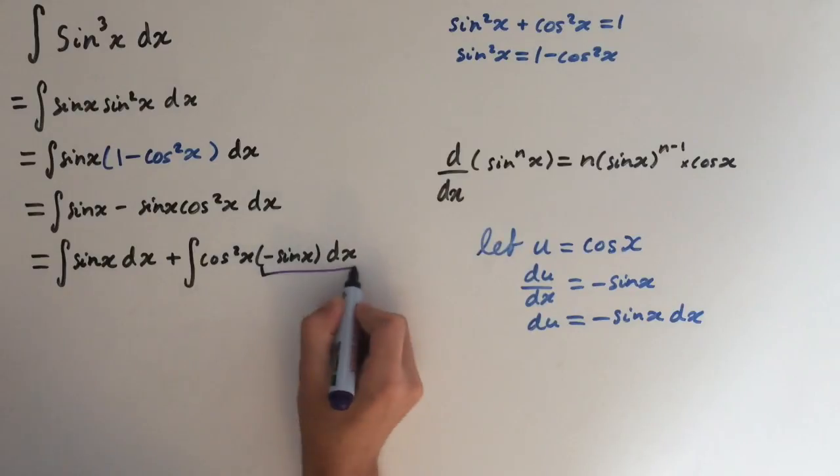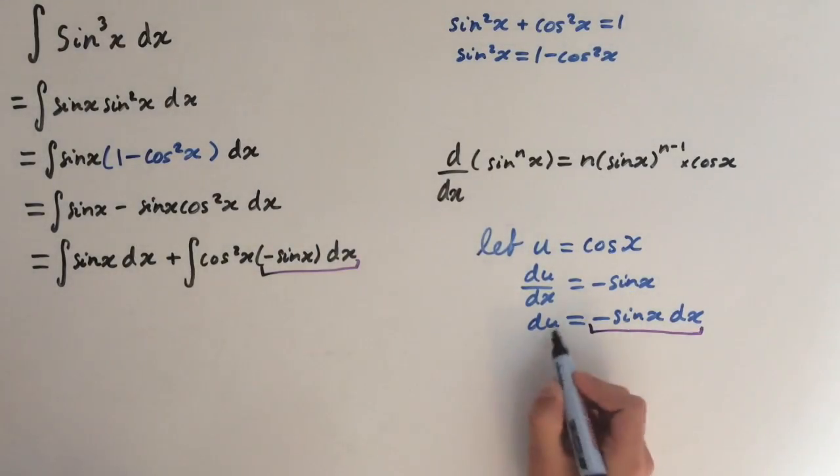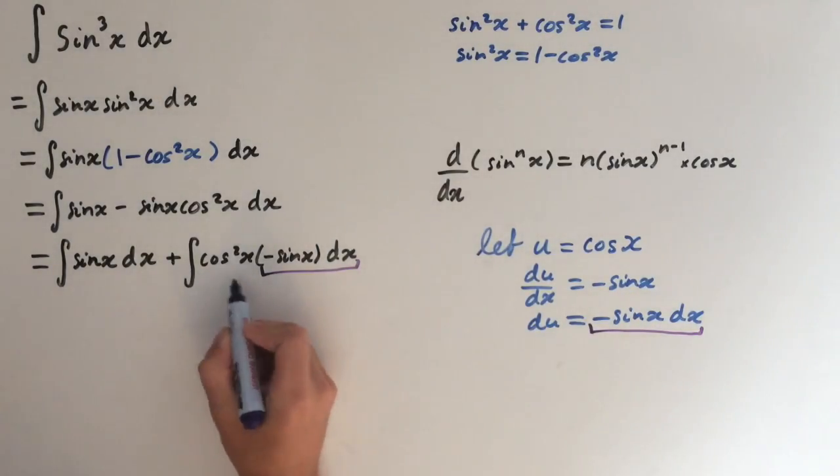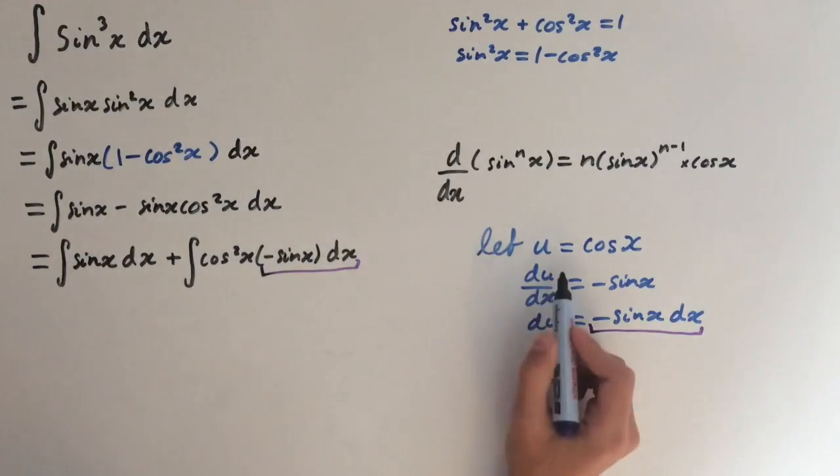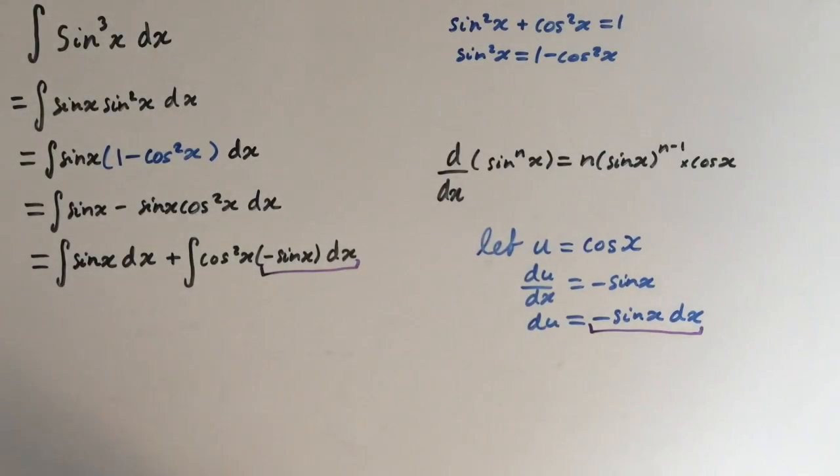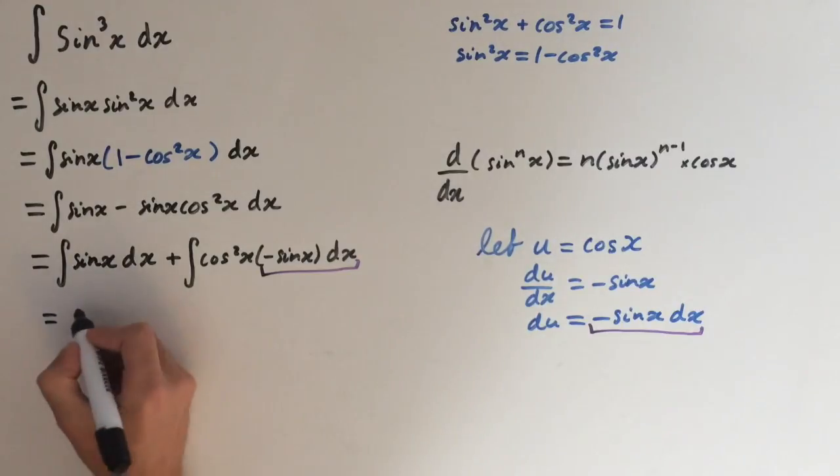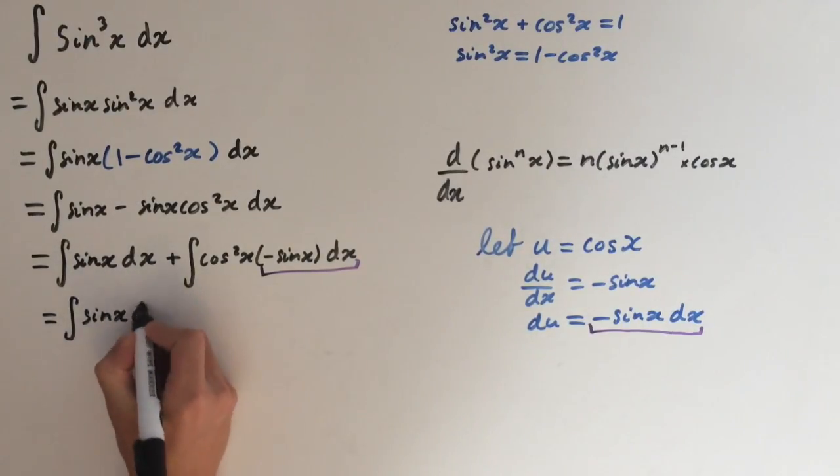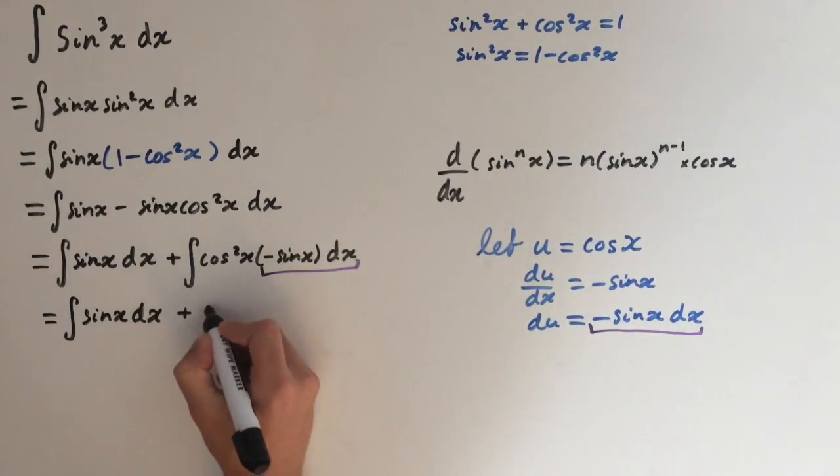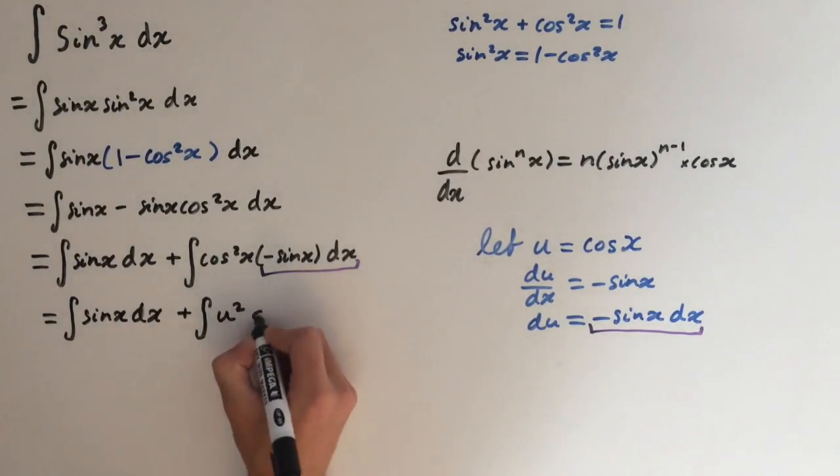We can substitute this bit here in for du and we can write cosine squared of x in terms of u. So let's do this. I'll just leave the first integral like it was: sine of x dx plus integral of u squared du. So now we can integrate both of these.